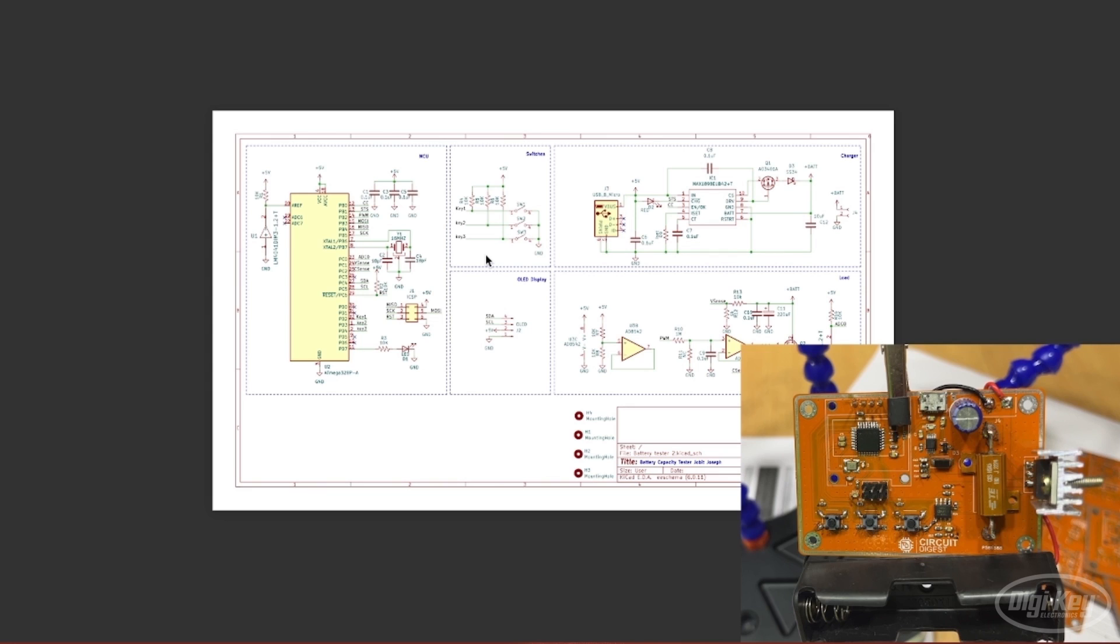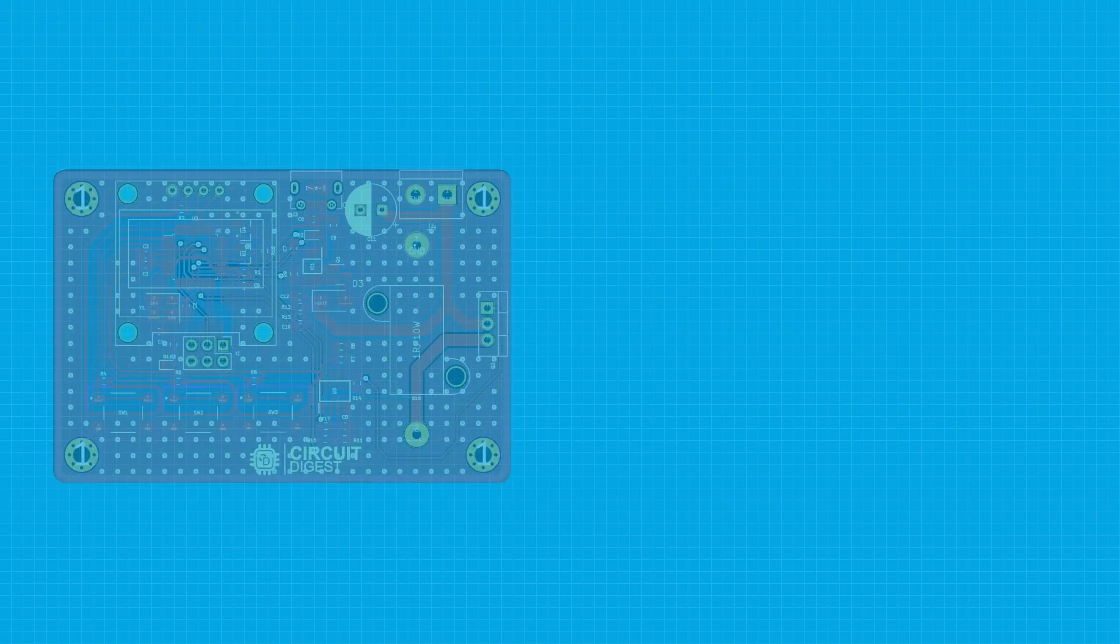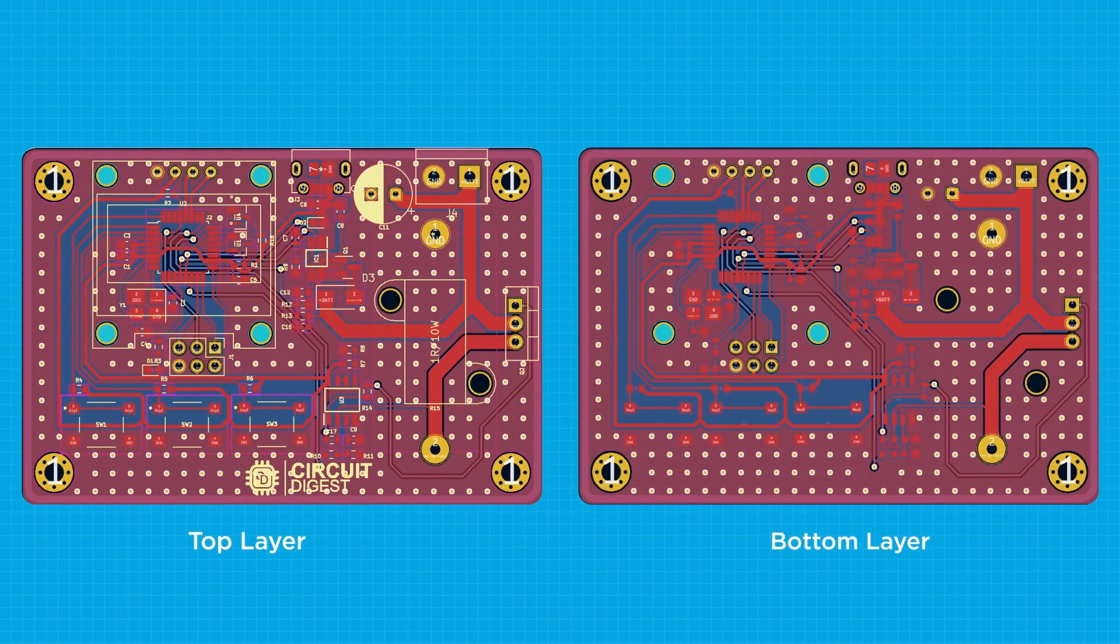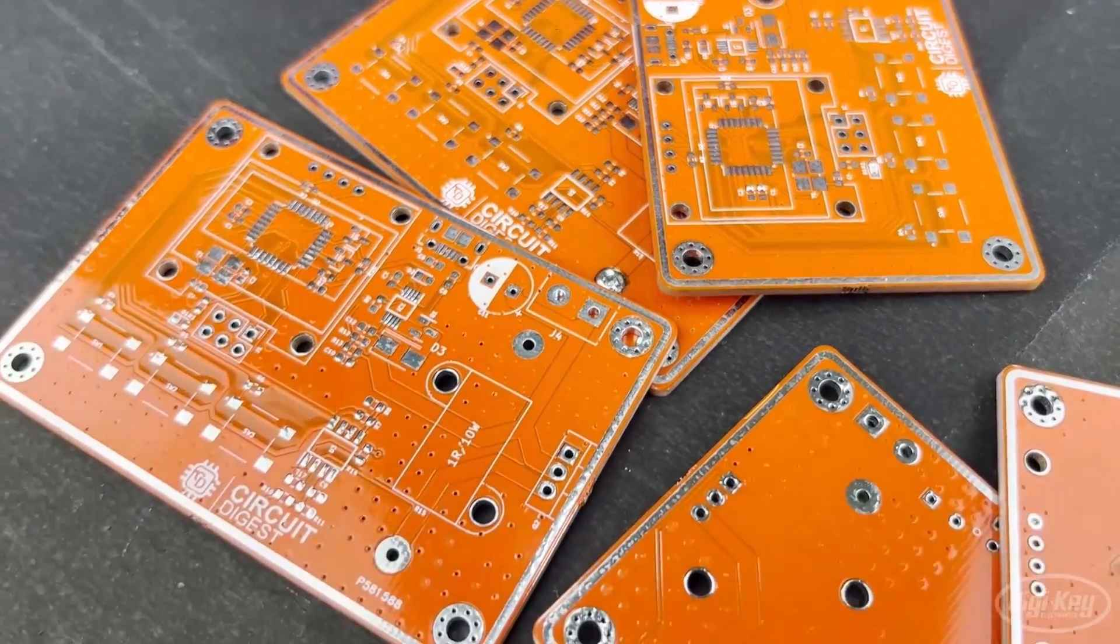Once the circuit diagram is ready all we had to do was convert the circuit diagram into a Gerber file and get the PCBs ready. So this is the top layer and the bottom layer of the PCB design which we have used. To keep things visually appealing we tried the orange color masking on our PCB boards. Take a look at it, I am not sure if I really like it but what do you think?